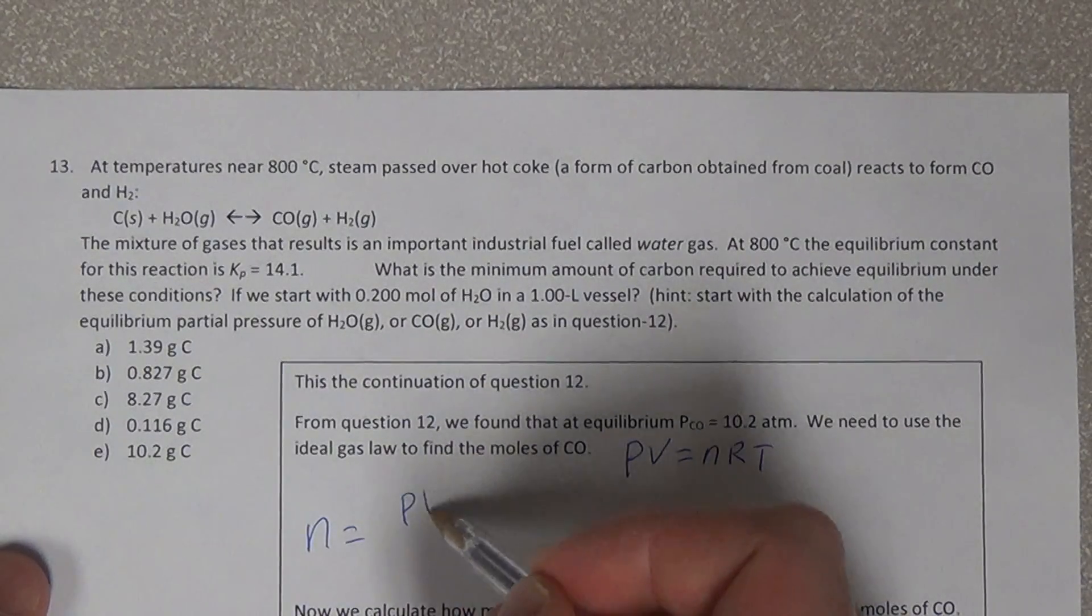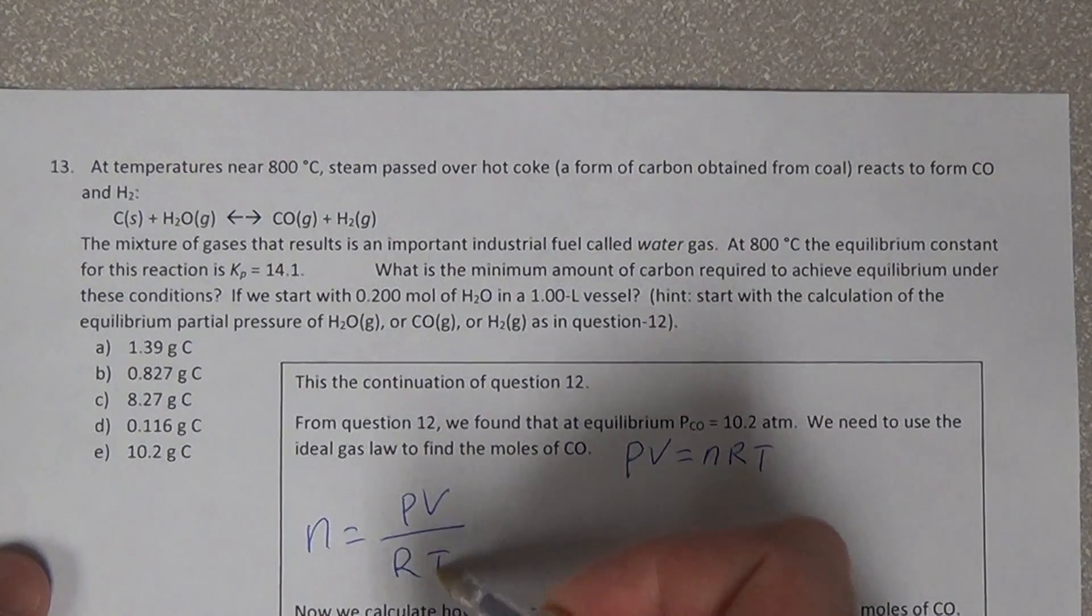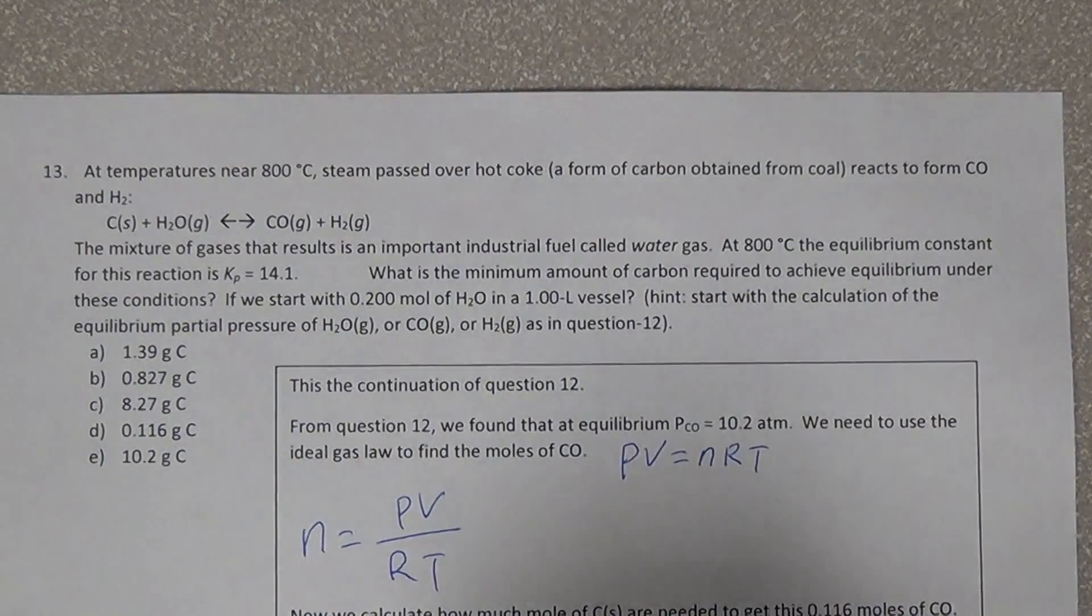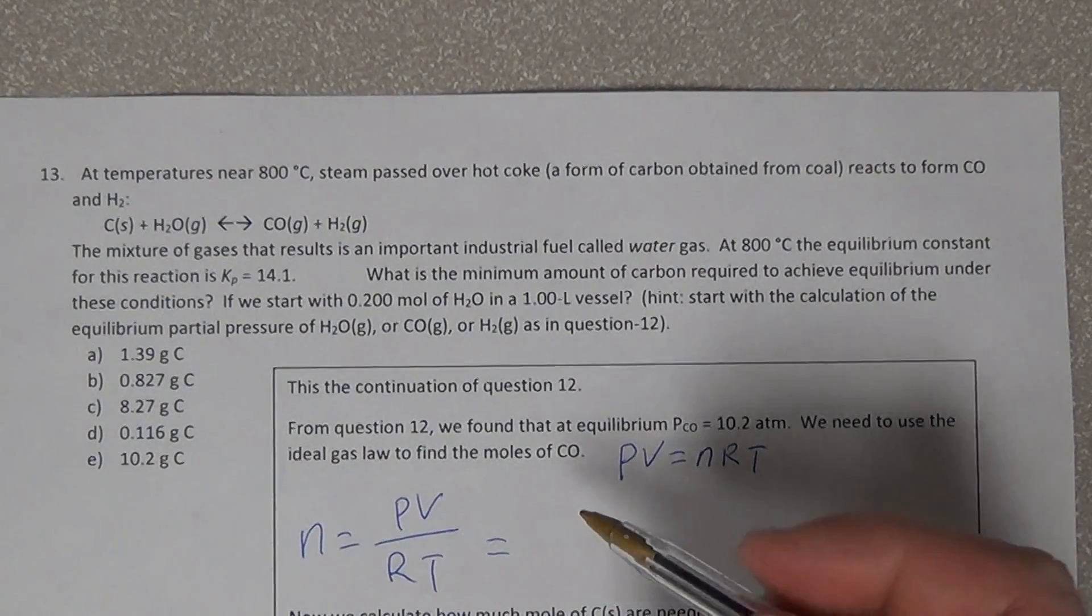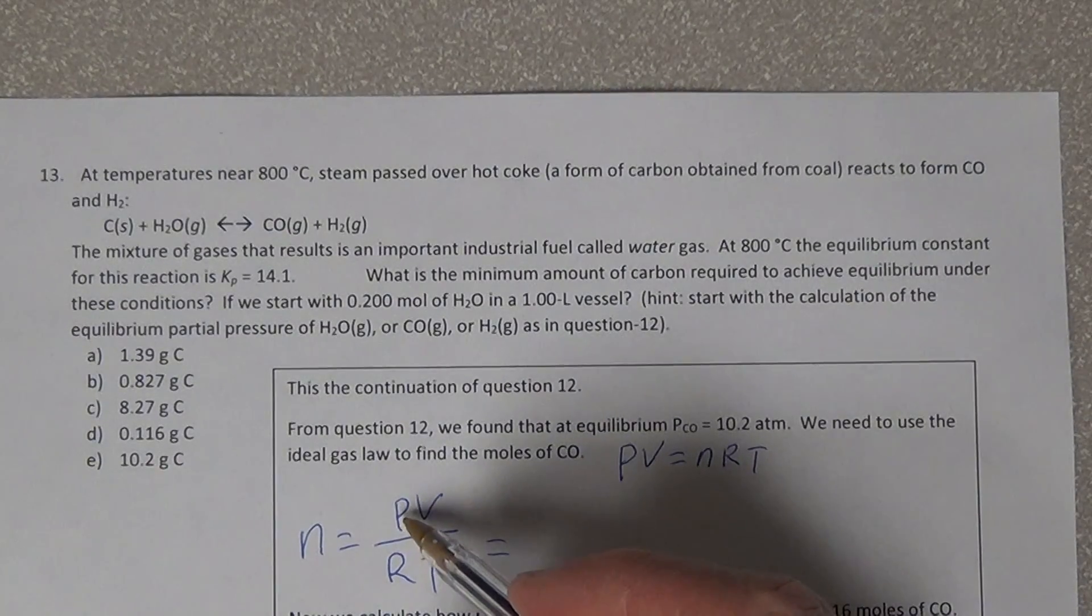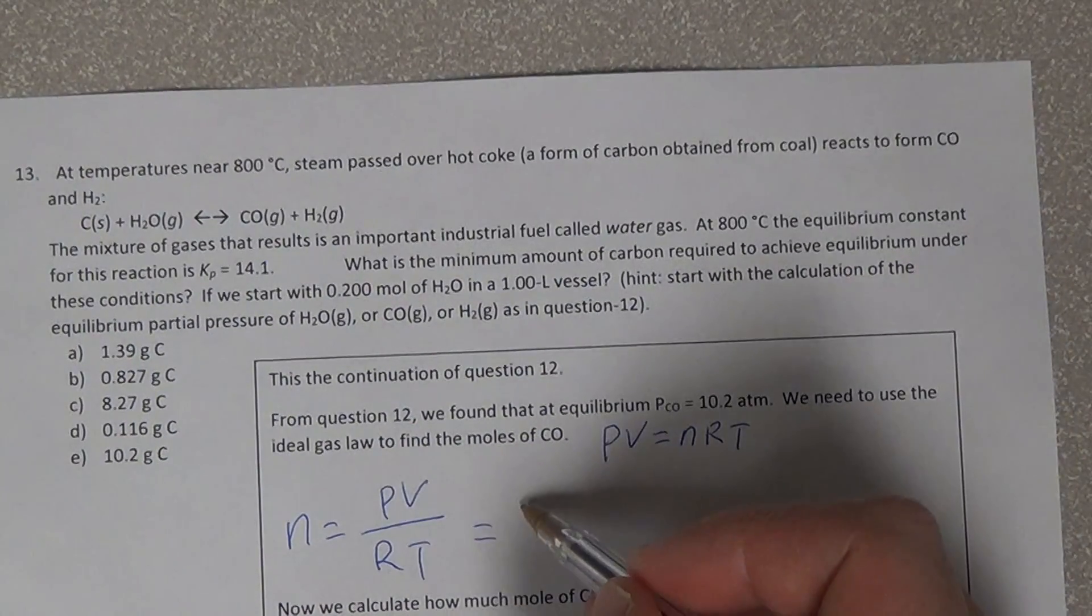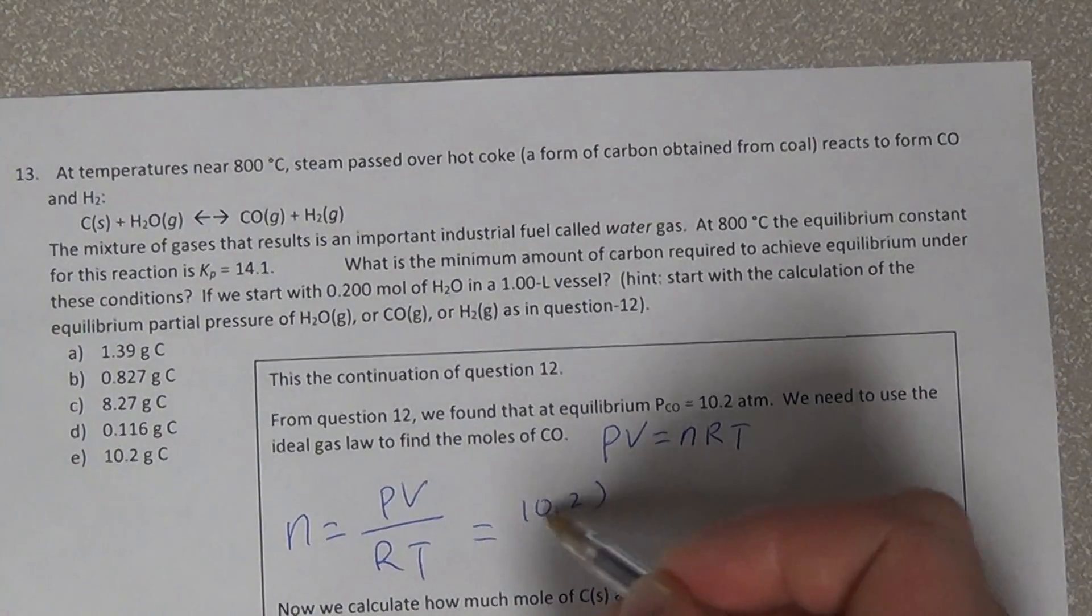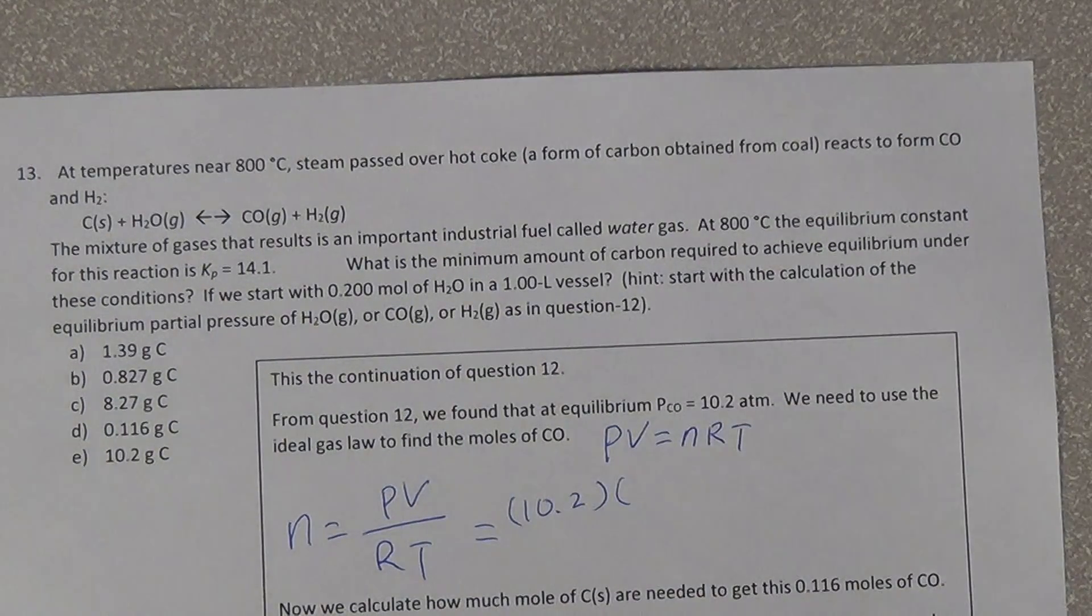We have the ideal gas law initially written as PV=nRT. So therefore, n equals PV/RT.